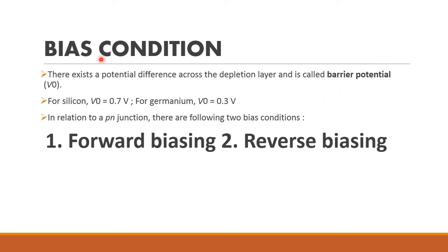If the semiconductor is silicon, then the barrier potential is 0.7 volt, because by applying 0.7 volt only we can break the junction. For germanium, its value is 0.3 volt.